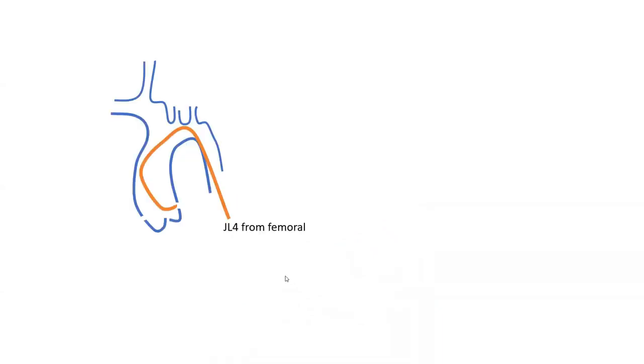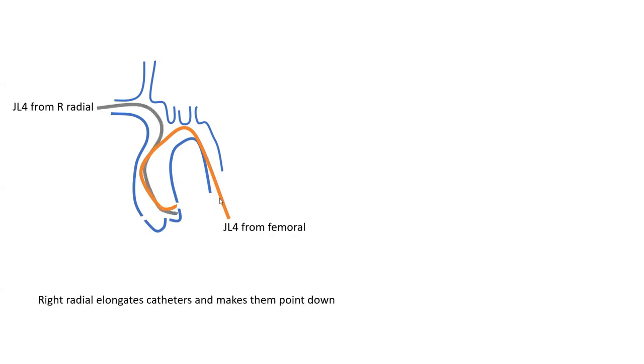Starting with the first clinical tip: this is a Jutkins left four coming from the left femoral and engaging the left coronary. It's very easy to engage the left coronary from a femoral axis using the Jutkins system, which is the preferred system for that. Now take that same Jutkins left four and use it from right radial, and here you see the first difference between radial and femoral.